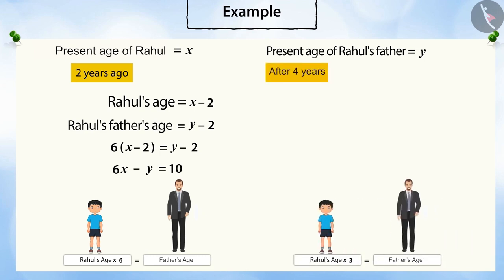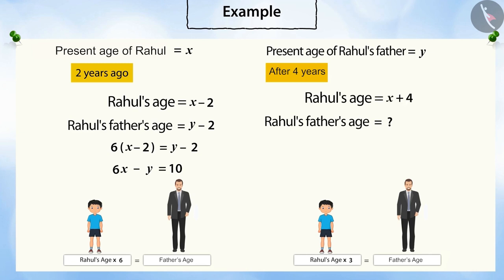Also, after four years, his father's age will be only three times that of Rahul's age. After four years, Rahul's age will be four years more than the present age, that is, X plus 4. And father's age will be Y plus 4. Now, can you make a linear equation of two variables? Let's see how to write this in algebraic form: 3 multiplied by (X plus 4) equals Y plus 4.